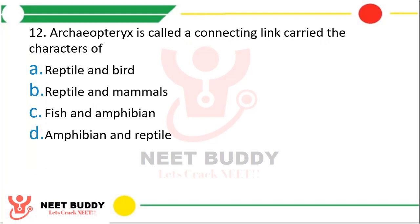Question 12: Archaeopteryx is called a connecting link carrying the characteristics of option A reptile and bird, option B reptile and mammals, option C fish and amphibians, or option D amphibians and reptiles. The correct answer is option A, reptiles and birds — hence it is also known as the connecting link between reptiles and birds.